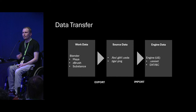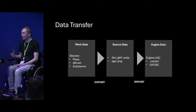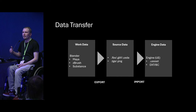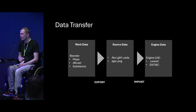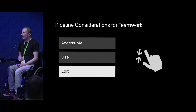Here's a graph of how data flows through the pipeline: we work in our software, go to an intermediate format, then to the engine — where it's usually converted again, since engines don't use FBX natively but do further conversions.